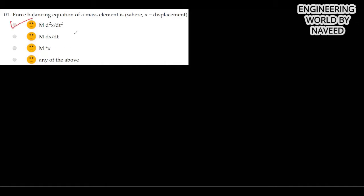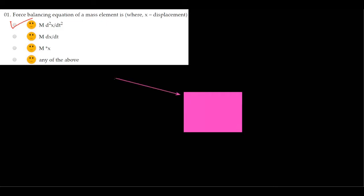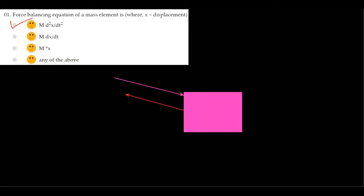The correct option will be m d²x/dt². To understand this, consider an ideal mass. Let's say this is the ideal mass and the force applied on this mass is f. There is an applied force and f_m, which is the opposing force due to this mass.